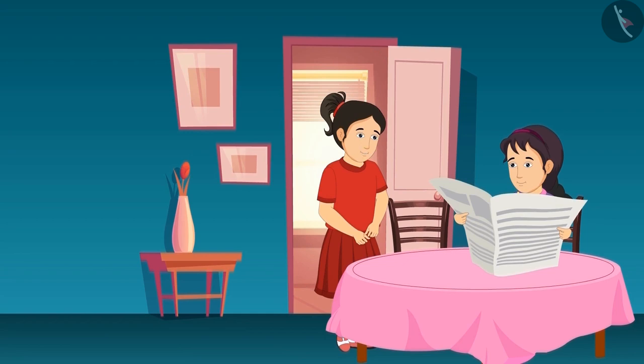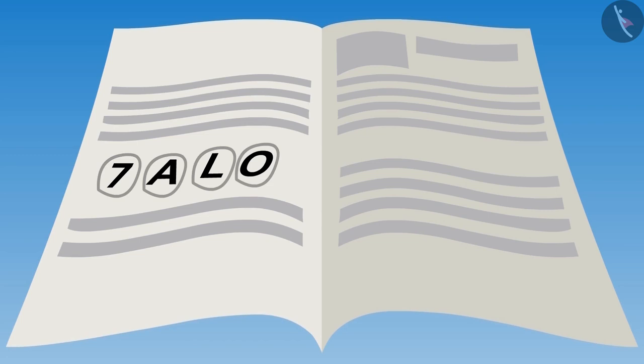Sister, what are you reading in the newspaper? Come on, let's play a new game. Meena got an idea of a new game after seeing the letters in the newspaper. She circled some alphabets and asked Riva.